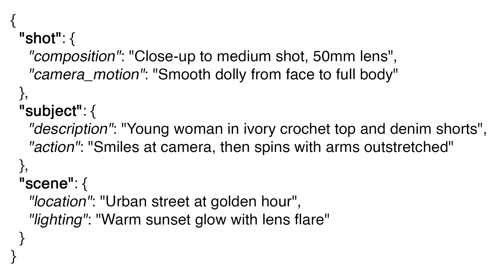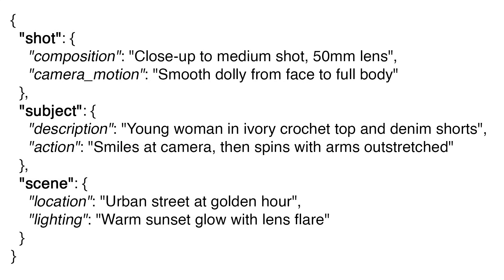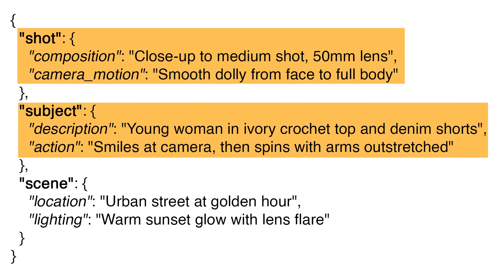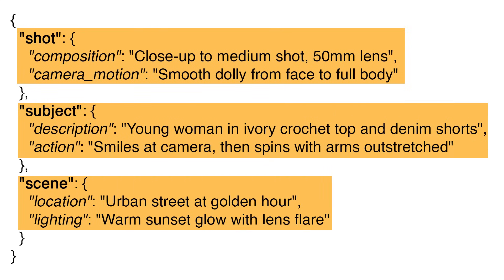With JSON prompting, you control everything — from the camera angle to the lighting to the action and more. It's like giving VO3 a detailed recipe rather than just asking it to make you dinner. The more specific your instructions, the better your video will be. A JSON prompt is just information organized into sections. The shot section is about the camera, the subject section describes who is in the video, and scene sets the location and lighting.